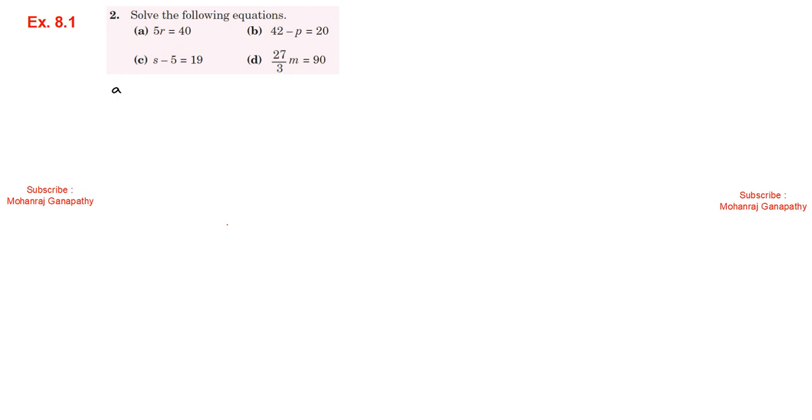Exercise 8.1, Sum number 2: Solve for the following equations. Part a: 5r equals 40. We solve for r by dividing both sides. So r equals 40 divided by 5, which equals 8. Therefore r is equal to 8.